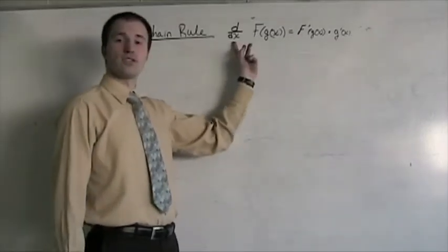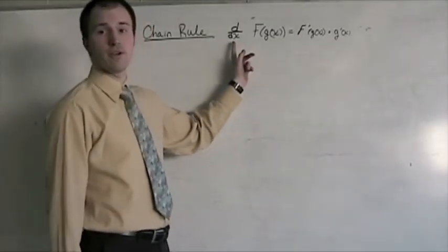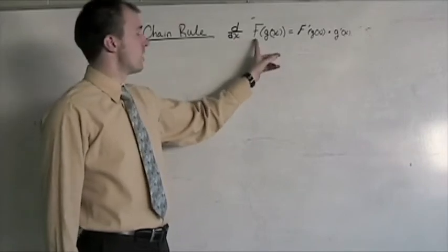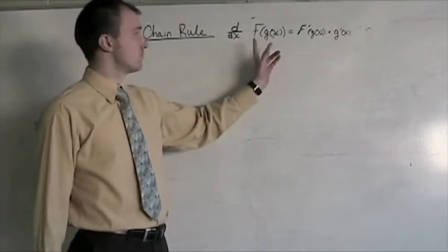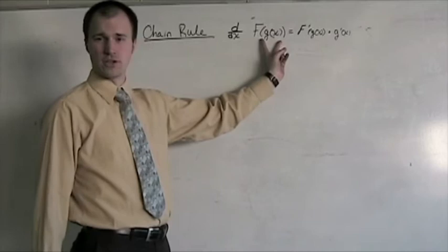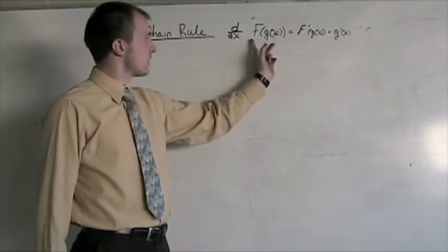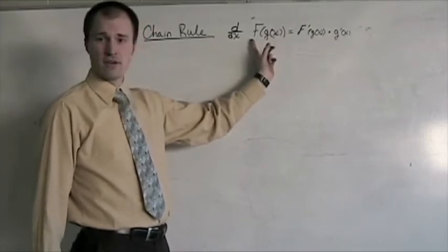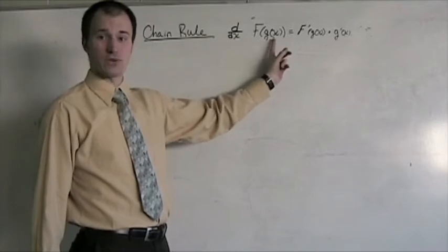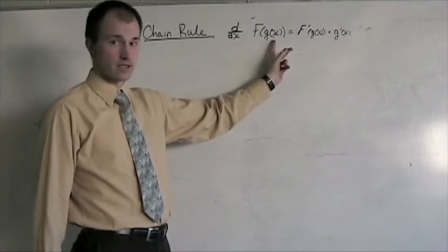And the chain rule states that d/dx, or the derivative with respect to x, of f of g of x. Again, just for notation purposes here, this is a function f, and every time there was an x, we replaced it with a new function, g of x.